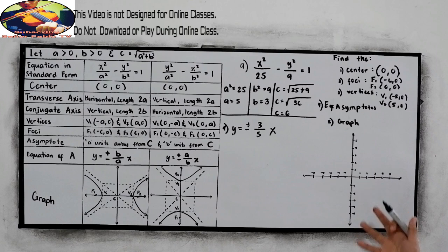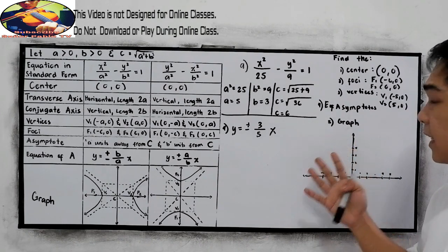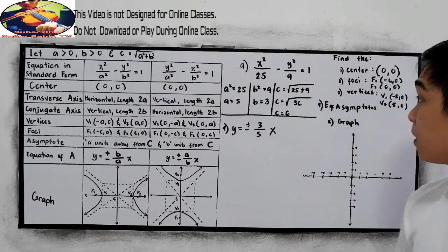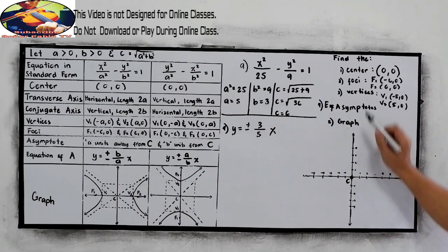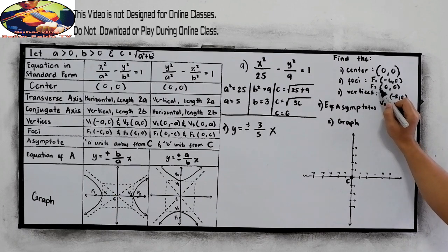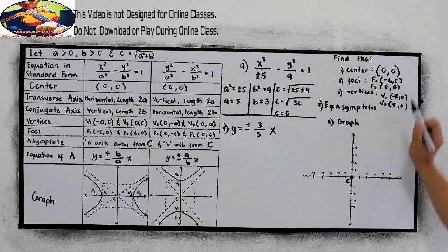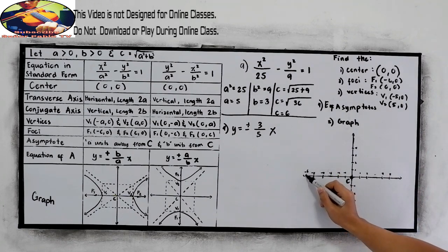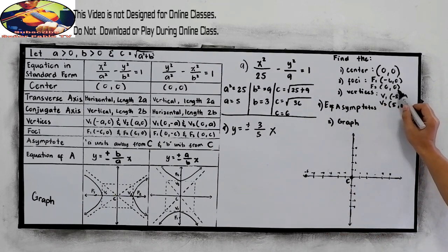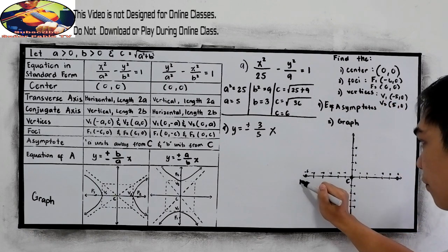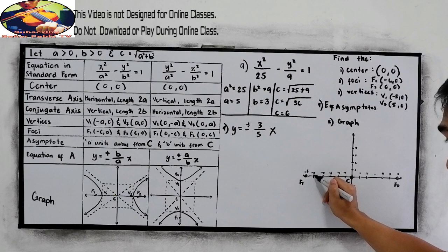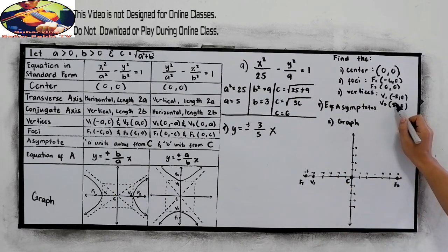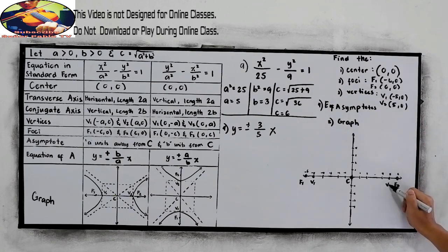Now we are ready to graph. Let us first locate our center, foci, and vertices. Our center is at (0, 0) — it's here. For the foci: F sub 1 is at (−6, 0) — plotted here; F sub 2 is at (6, 0) — plotted here. For the vertices: V sub 1 is at (−5, 0) and V sub 2 is at (5, 0).